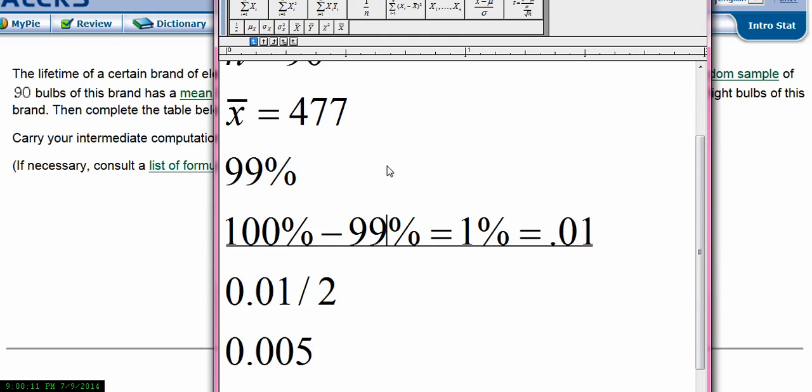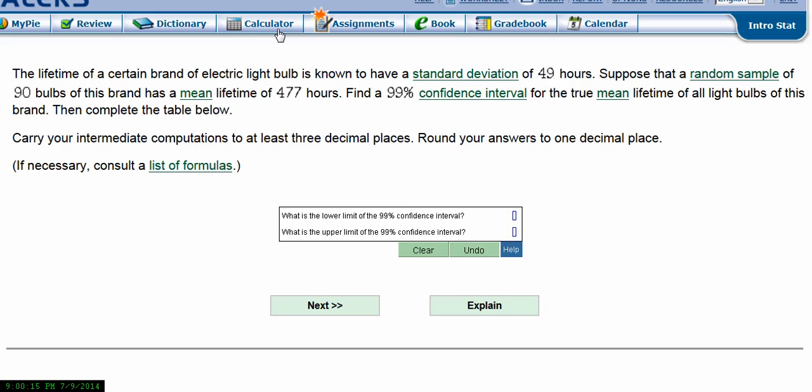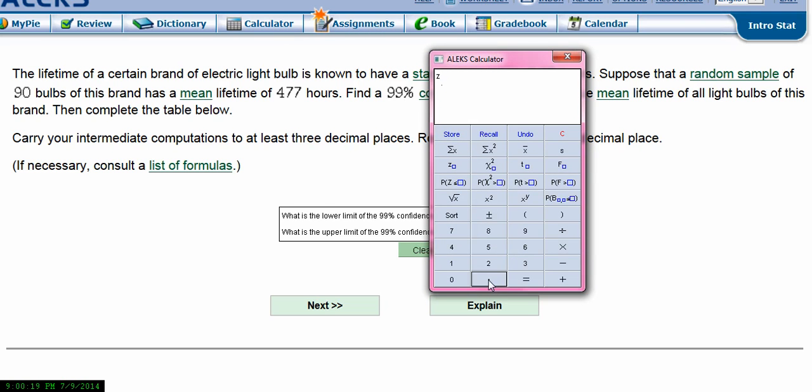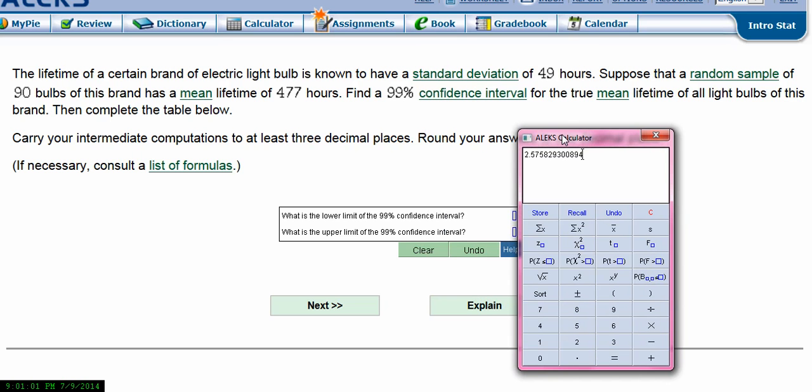So then we're going to go out to the Alex calculator and compute the z-score. So we can do z of 0.01 divided by 2. Alex will actually do that for you. Or you can plug in z of 0.005. And so we get that z-score of 2.5, and they say round it to at least 3 decimal places. So 2.576, because the 8 would round that 5 up to a 6.